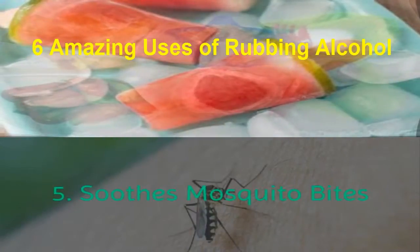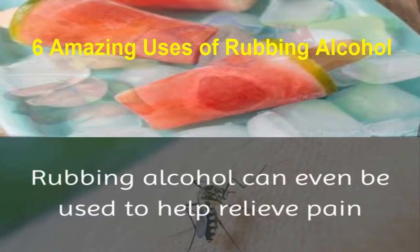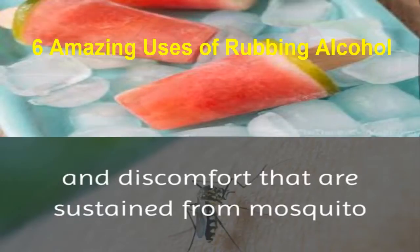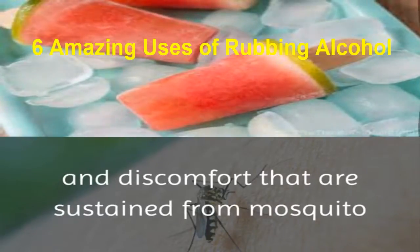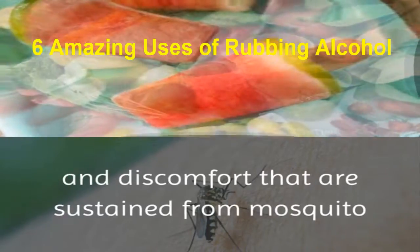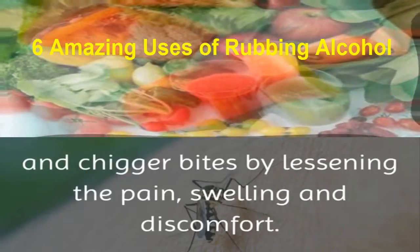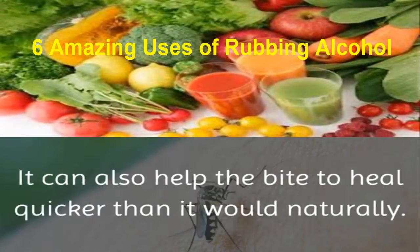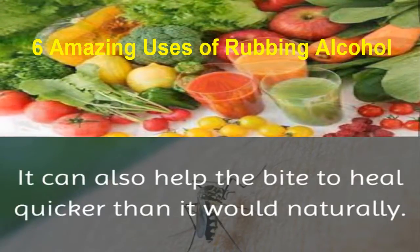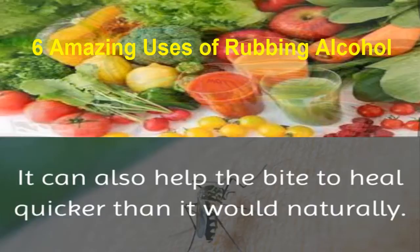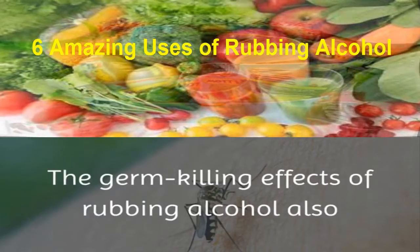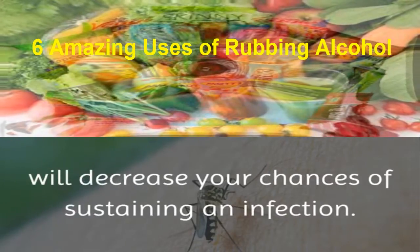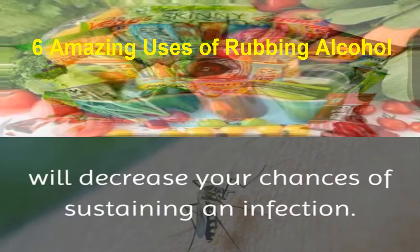5. Soothes Mosquito Bites. Rubbing alcohol can be used to help relieve pain and discomfort from mosquito and chigger bites by lessening the pain, swelling, and discomfort. It can also help the bite to heal quicker than it would naturally. The germ-killing effects of rubbing alcohol will also decrease your chances of sustaining an infection.